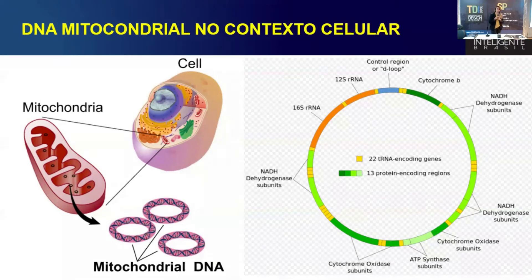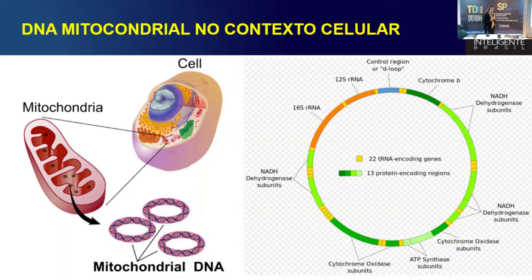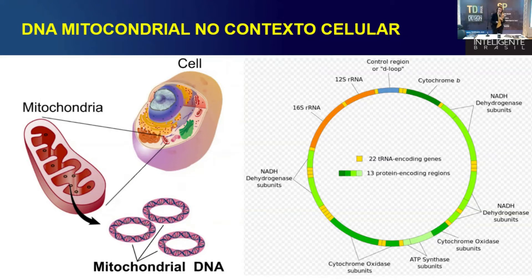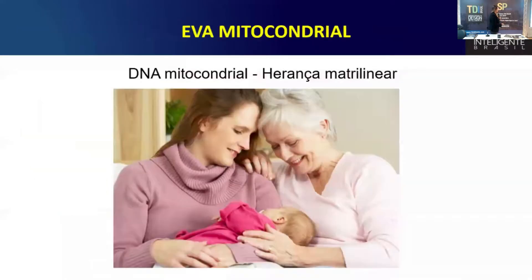O que nós temos nesse DNA mitocondrial? Nós temos 37 genes, então sequências codificadoras, e temos, entre os genes, alguns nucleotídeos que seriam o espaçador intergênico, que não codifica nada. Quando a gente compara a sequência de DNA mitocondrial da Rogéria com a sequência do professor Marcos Eberlin, do Everton, nós vamos ver muita similaridade, mais do que 99%. E vamos ver também uma pequena diferença. Essa diferença não está nas sequências gênicas, essa diferença está nas sequências intergênicas, e é uma diferença muito delicada mesmo, muito sutil.